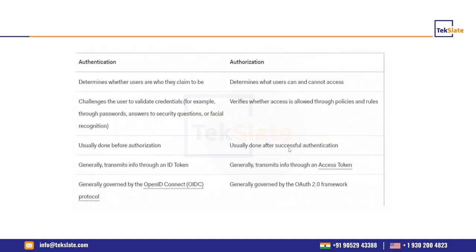Authentication determines who a user claims to be — it is usually done before authorization and generally transmits an ID token. Authorization determines whether a user can or cannot access a resource, verifying whether access is allowed through policies and rules. Authorization is usually done after authentication.